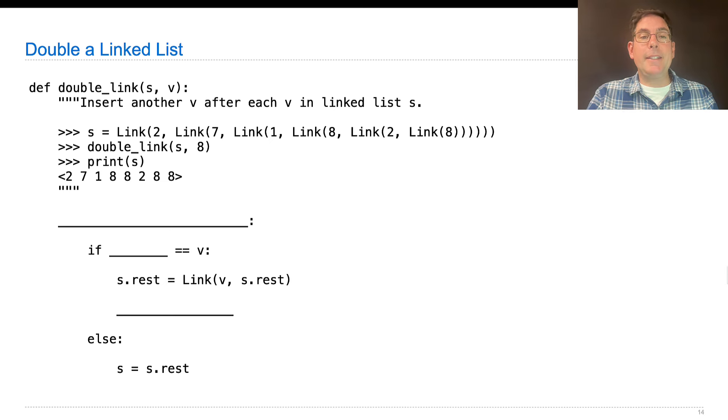Here's how you do it with a linked list: 2, 7, 1, 8, 2, 8. Doubling the links is a mutation operation where now we have 2, 7, 1, 8, 8, 2, 8, 8.